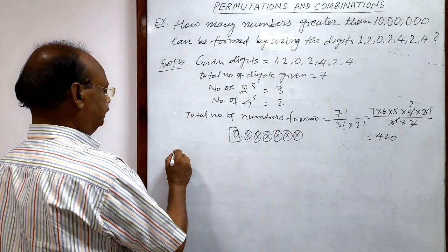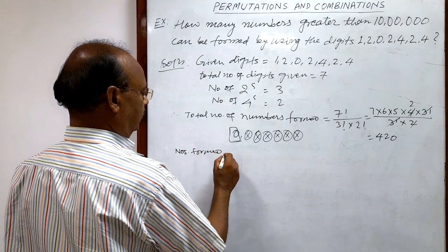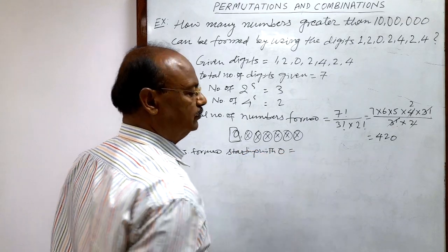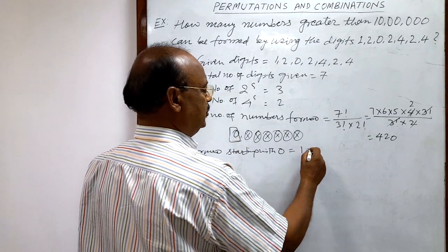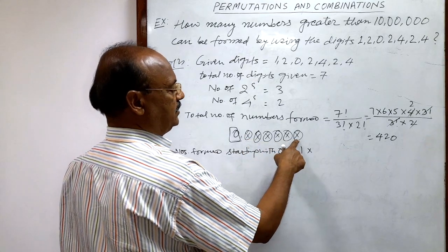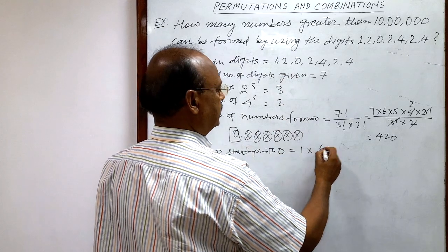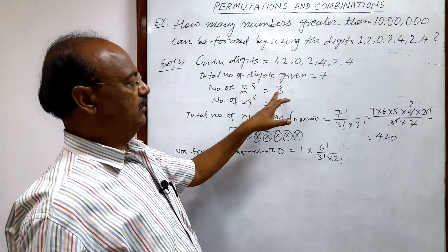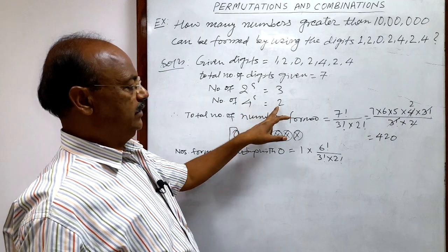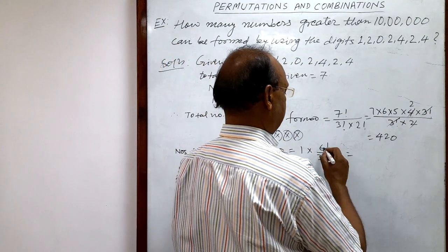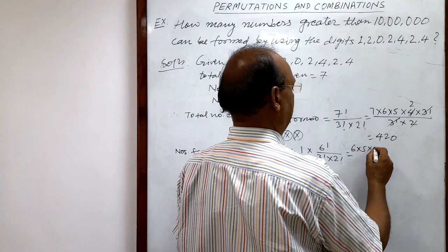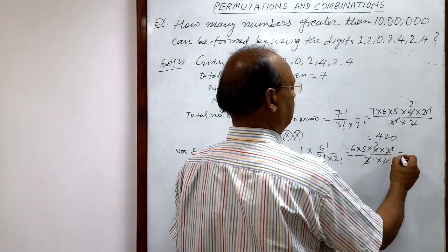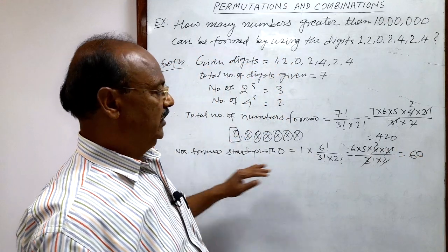Numbers starting with zero: the first place has only one option (zero), and the remaining six places can be arranged with the other six digits as 6! divided by 3! (since 2 is repeated three times) divided by 2! (since 4 is repeated twice). Simplifying: 6 × 5 × 4 × 3! divided by 3! × 2 = 60. So 60 numbers start with zero.